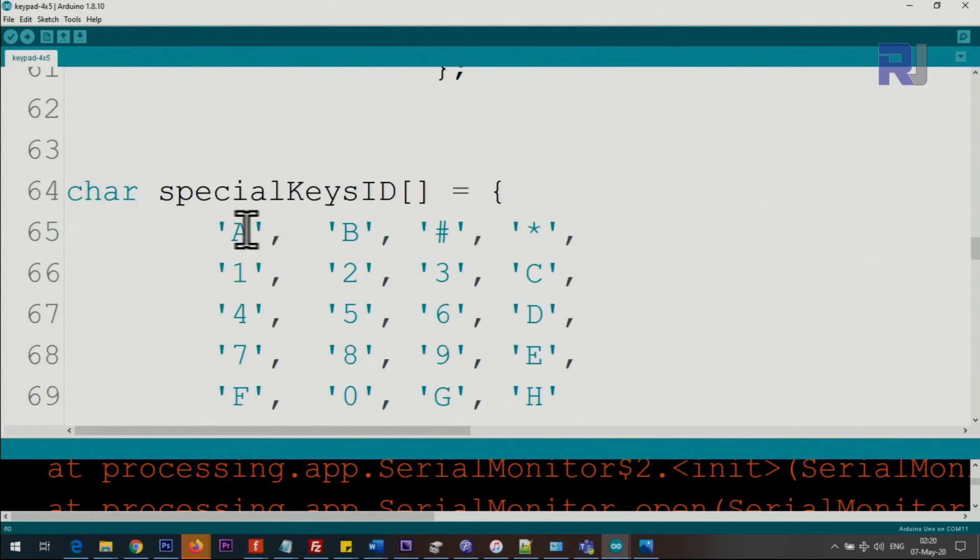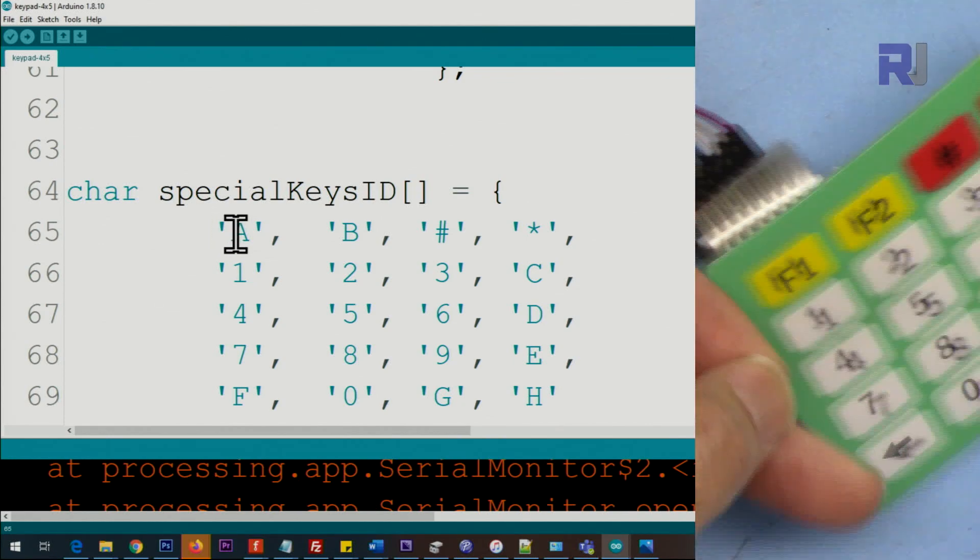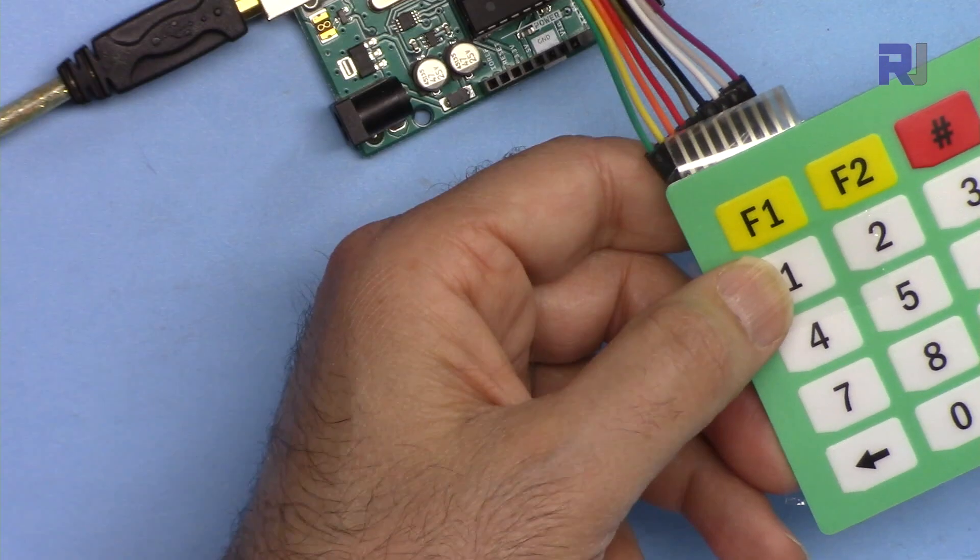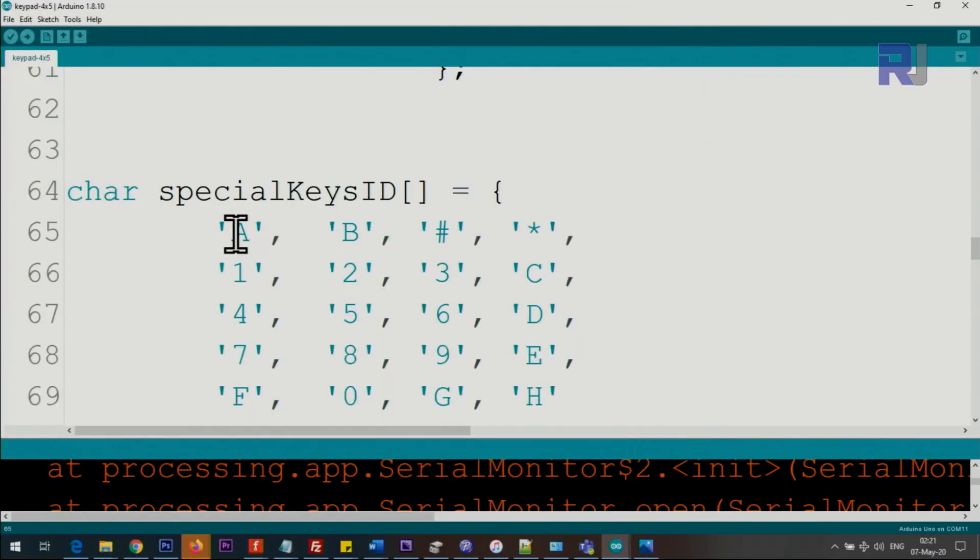And here these are the actual keys. Inside the single quotes we have, instead of F1 and F2 and all this, to use a single character, here I use A, B, and then C, and this hash, and then star is the same. All the numbers are the same except any key, this is up, this is down, this is left, right, and this is enter.